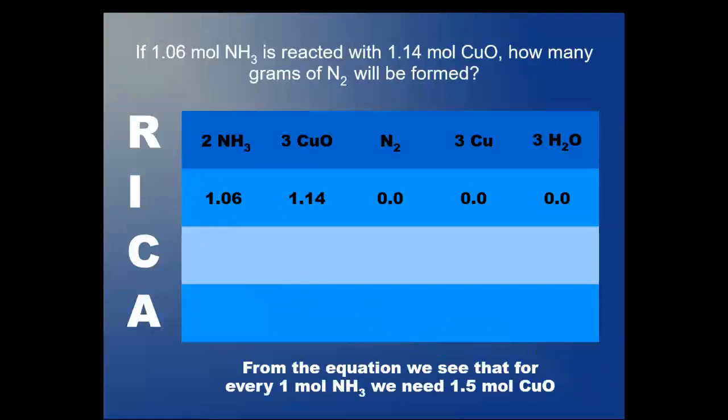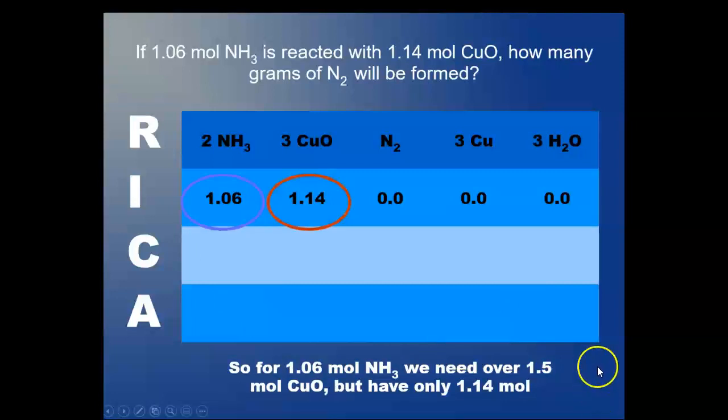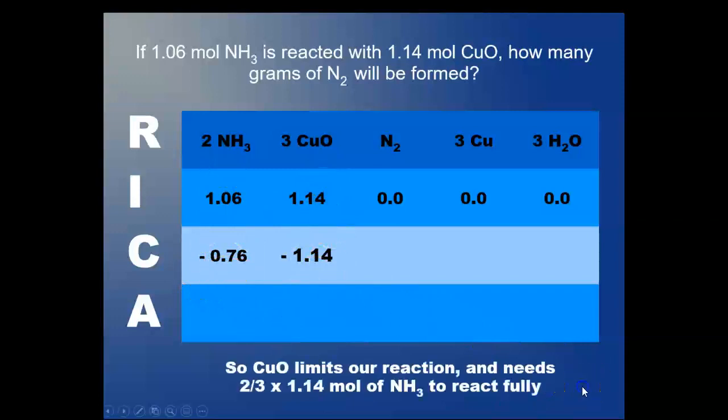From the equation, we see that for one mole of ammonia, we were going to need 1.5 moles of copper oxide. You can automatically see we don't have enough copper oxide for all this ammonia. So for 1.06 moles of ammonia, we need over 1.5 moles of copper oxide. We don't have that much, so what is limiting? Right, it's the copper oxide. We're going to get rid of all that in the reaction and have some ammonia left over. The copper oxide is our limiting, the ammonia is our excess.